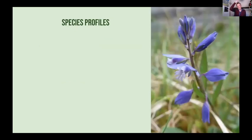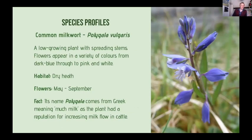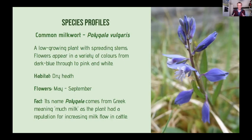Another plant that's been in flower for a couple of weeks on the moors is milkwort. There are two species, so closely related you can barely tell them apart — one likes dry areas, one likes wet, distinguished mainly by leaf orientation. One notable thing about milkwort is its huge colour variation: from dark blue through violet, pink, and white — same species but wide colour range. The name Polygala comes from Greek meaning much milk, as it had a reputation for increasing milk flow in cattle.